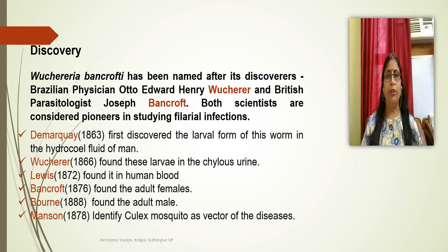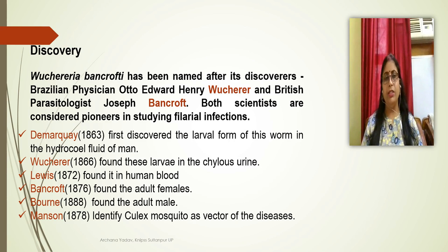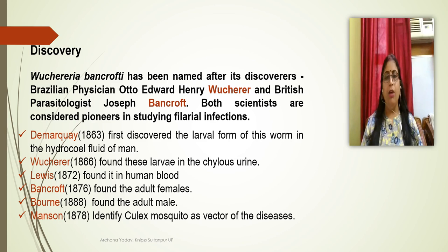Wuchereria bancrofti has been named after its discoverers: Brazilian physician Wucherer and British parasitologist Bancroft. Both scientists are considered pioneers in the study of filarial infection. Another contributor, Demarche, discovered the larval form in the hydrocele fluid of man. Wucherer in 1866 found larvae in chylous urine — chyle being the mixing of lymph and emulsified fat content.